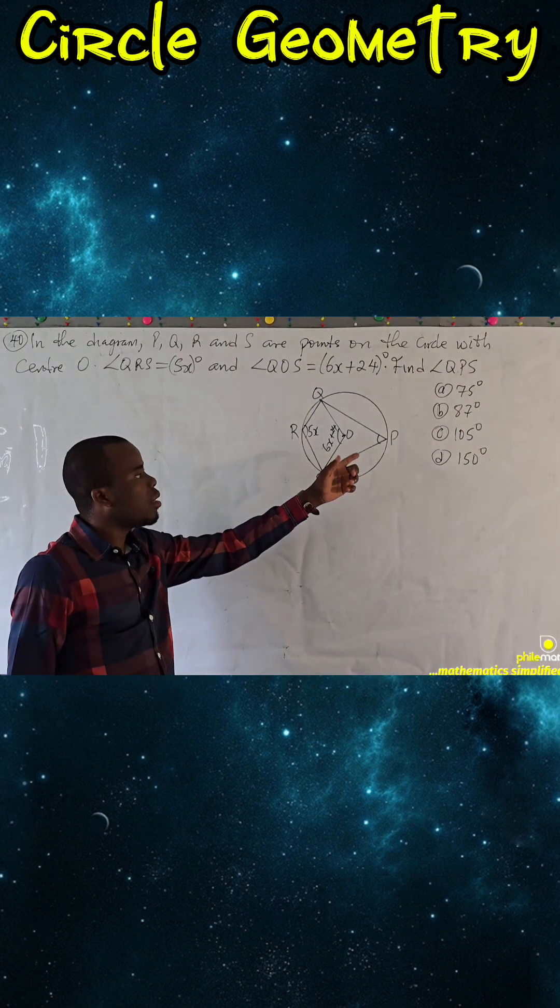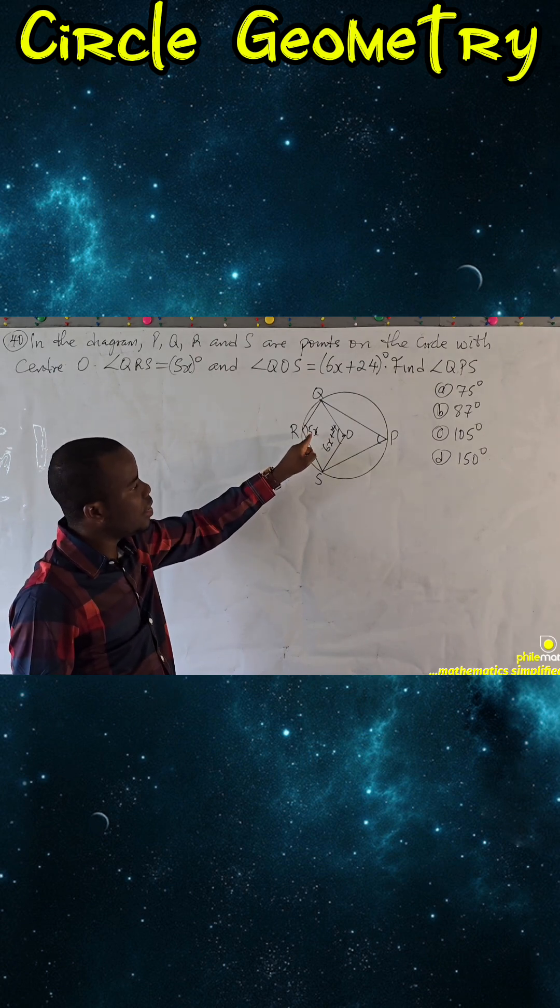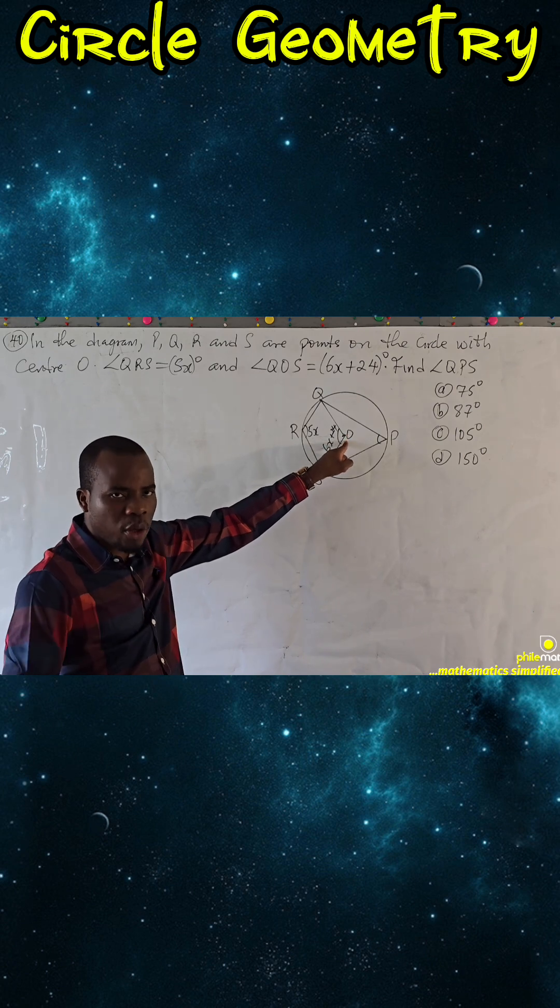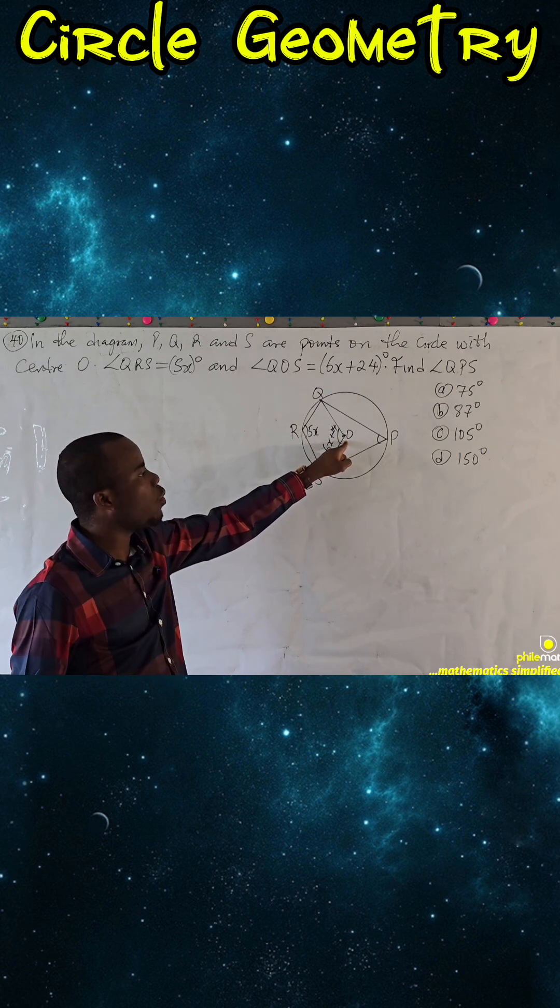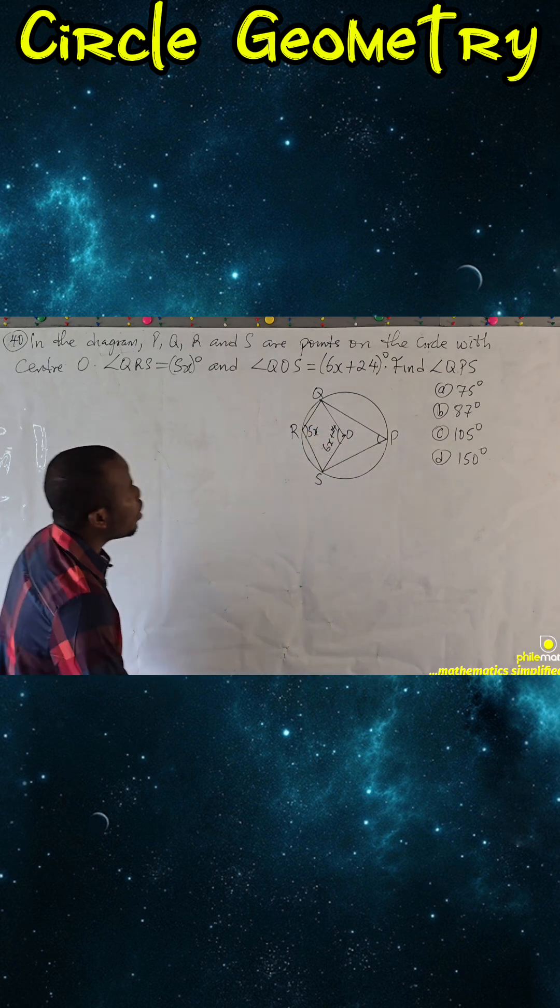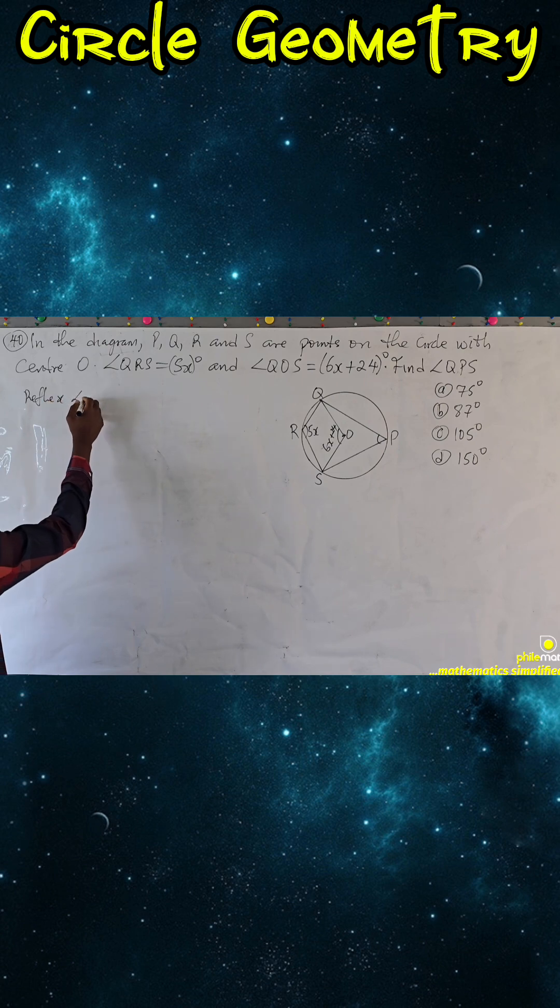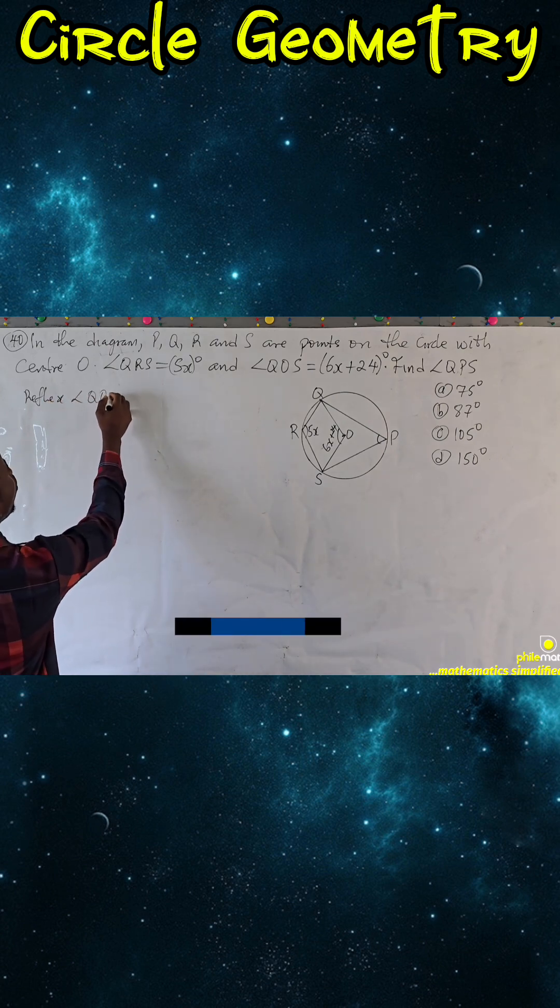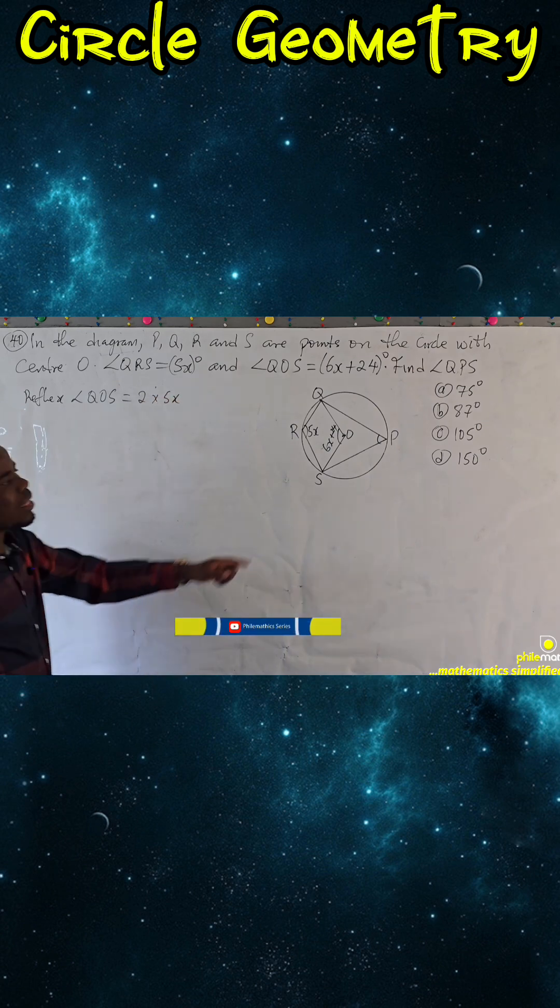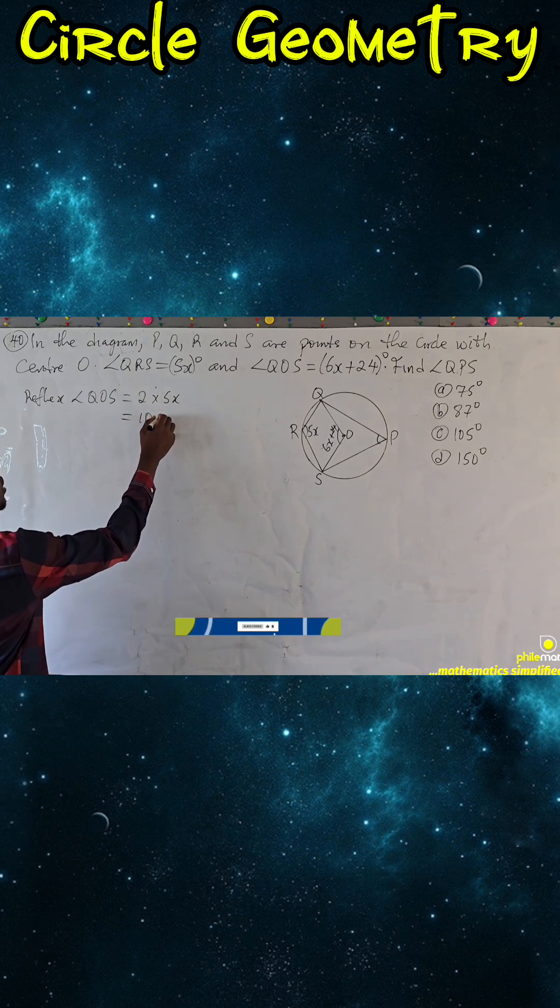The first thing you want to do is to find what x is. From circle geometry, this angle from this angle we can get this angle. Like I always say, start with the angle you know to get unknown angle. The angle here is just twice this angle. Reflex angle QOX is simply twice because angle at center is twice angle at circumference. This gives us 10x.